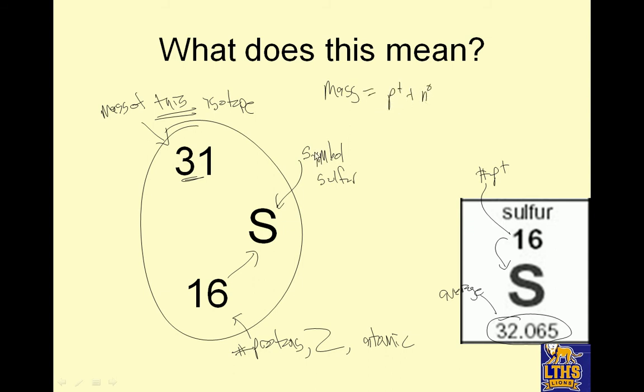So if I ask you how many neutrons are in this guy right here, my mass of this isotope is 31 equals the number of protons, 16, plus neutrons, which should be 15. So 31 minus 16 equals N. N equals 15. Isn't that nifty?